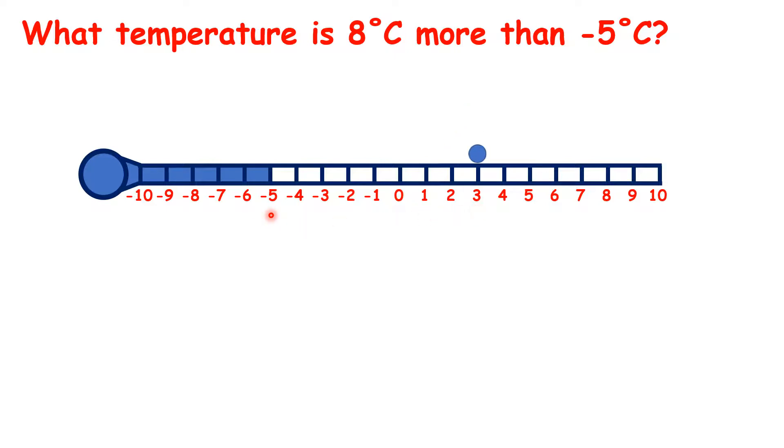So if it's minus 5 degrees and the temperature goes up by 8 degrees, we get 3 degrees. But rather than using a number line to count through 0, let's try a quicker method.